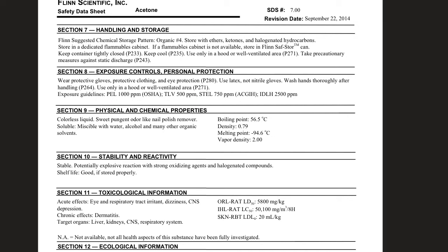Section nine: physical and chemical properties. Here is basically its description — it's colorless, has a sweet pungent odor like nail polish remover, it'll dissolve in water and in alcohol. Boiling point, density, melting point — any properties you want to know about acetone are in this section. Section ten: stability and reactivity. It's stable, but potentially explosive in reaction with strong oxidizing agents or halogenated compounds. The shelf life is pretty good if stored properly — stable means it's not going to just sit there and cause a reaction all by itself.